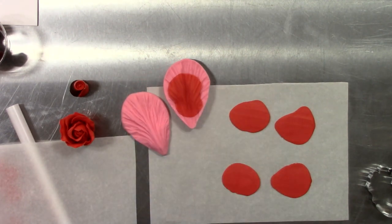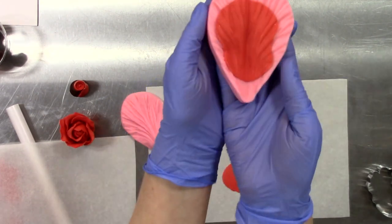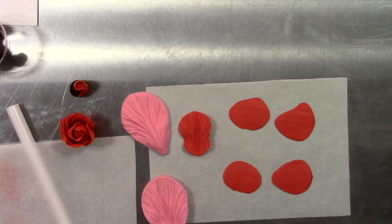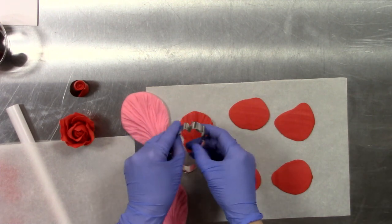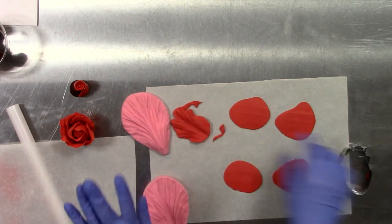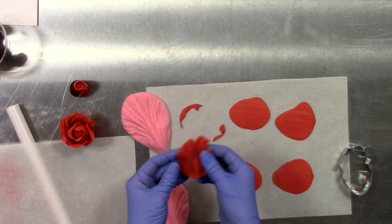Pull it out, let it cool just a minute, and then using our cutter, cut out our shape. These are going to be our last or outer row of our rose.